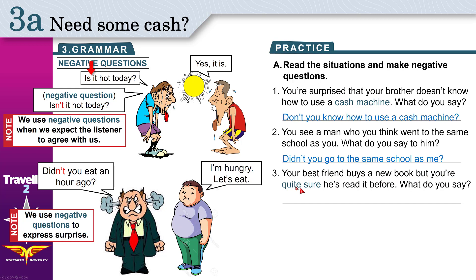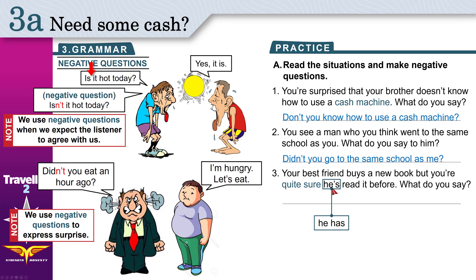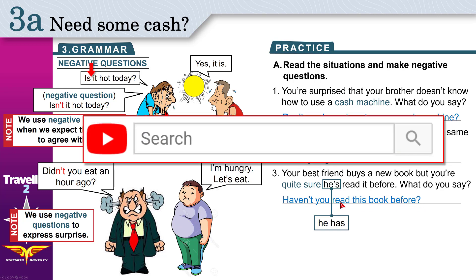Third situation: your best friend buys a new book, but you're certain he's read it before. Notice 'before' is used with present perfect simple. 'He's' is short for 'he has' — 'he has read it before.' So the negative question is 'Haven't you read this book before?' If you forgot present perfect simple, search 'Motos Madim present perfect simple' on YouTube.